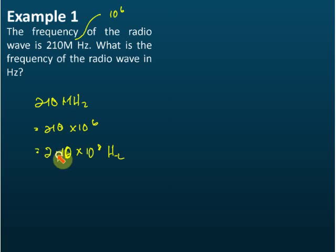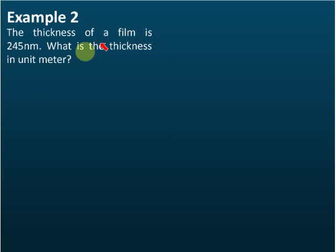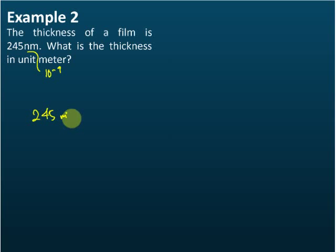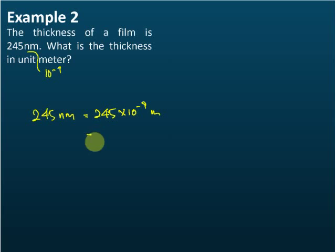Example two: The thickness of a film is 245 nanometers. What is the thickness in meters? Nano, if you check the table, equals 10 to the power of negative 9. Therefore, 245 nanometers equals 245 times 10 to the power of negative 9 meters. But is this standard form? No, it is not.